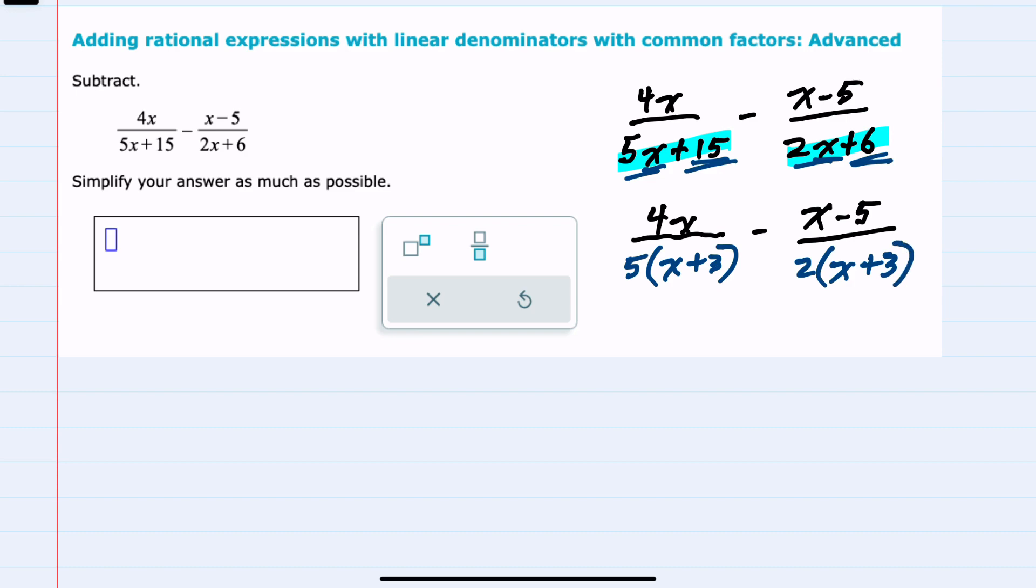Now that these are each fully factored, I know that my lowest common denominator must have each of these factors represented. Since both the left and the right have an x plus three, then our lowest common denominator must have an x plus three.